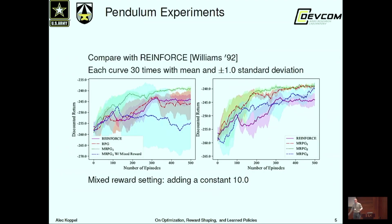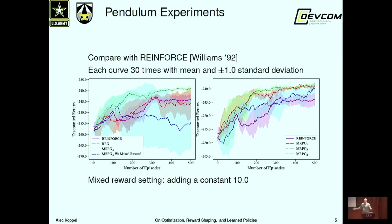We see this borne out in practice. The green curve here is the policy gradient method using Monte Carlo rollouts for the Q function, with a reward offset applied to ensure positivity. This performs better than more classical techniques without any reward offset. This is a very simple thing we can do and it improves the performance of these algorithms — we just add 10 to the reward in the pendulum environment.